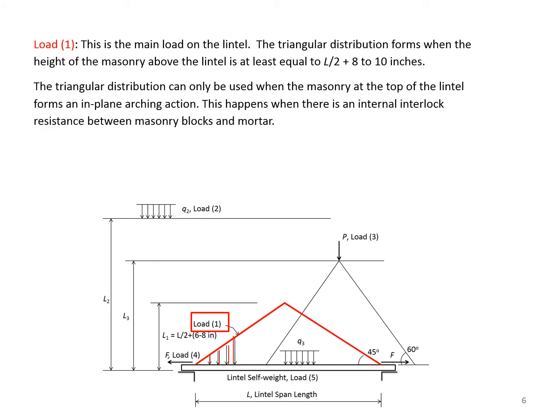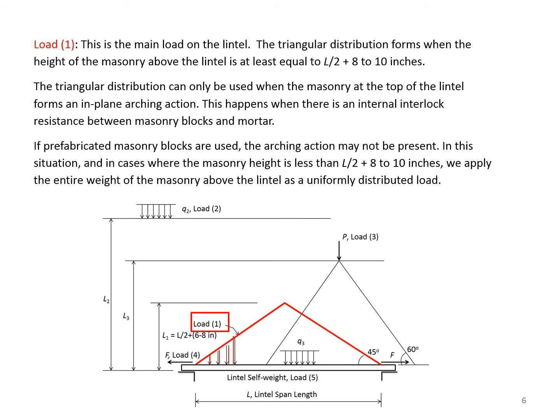The triangular distribution can only be used when the masonry at the top of the lintel forms an in-plane arching action. This happens when there is an internal resistance between masonry blocks and mortar. If prefabricated masonry blocks are used, the arching action may not be present. In this situation and in cases where the masonry height is less than L/2 plus 8 to 10 inches, we apply the entire weight of the masonry above the lintel as a uniformly distributed load.